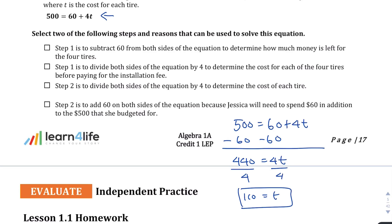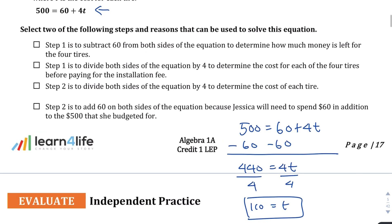They want us to select two of the following steps and reasons that can be used to solve this equation. So presumably two of these are right, two of these are wrong. So let's take a look. Step 1 is to subtract 60 from both sides of the equation to determine how much money is left for the four tires. So that's the first thing that we did actually. We subtracted 60. So I actually like that one.